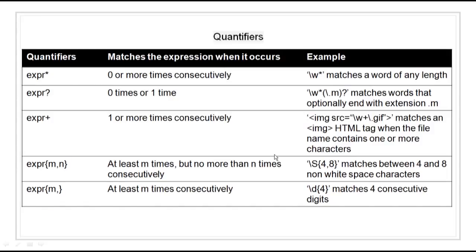We also have quantifiers that form part of a regular expression. When an expression is followed by a star (*), it means 0 or more times consecutively. A question mark (?) means 0 or 1 time. A plus sign (+) means one or more times consecutively. Curly braces {m,n} means at least m times but no more than n times. And {m,} means at least m times consecutively.